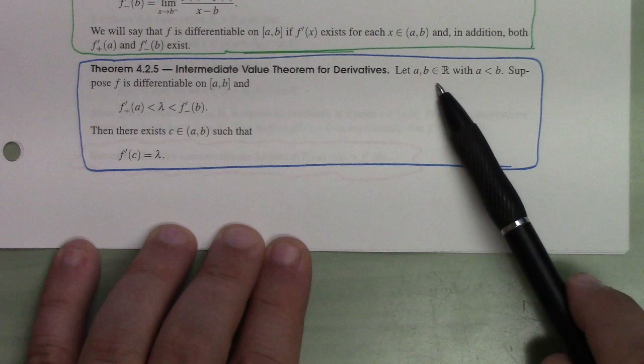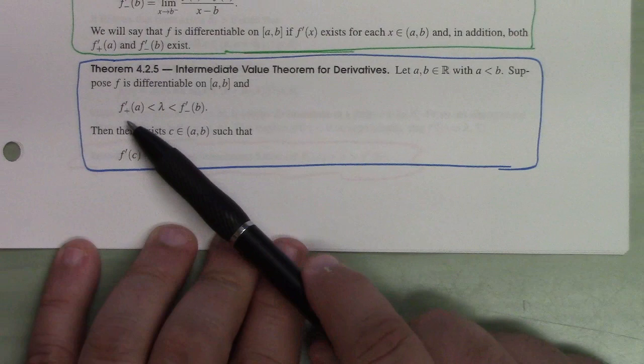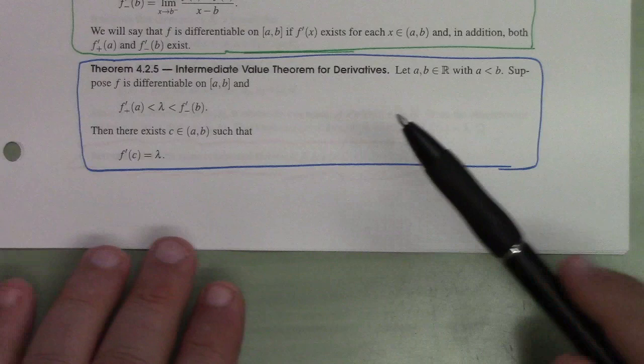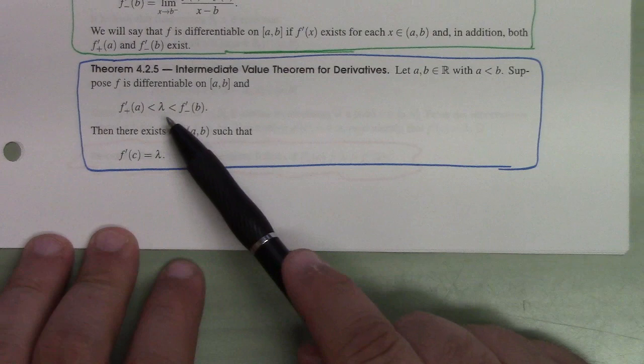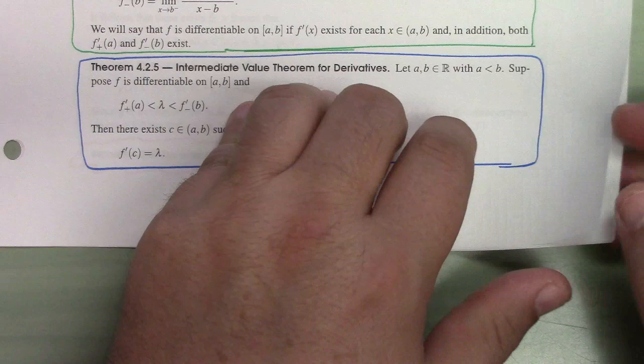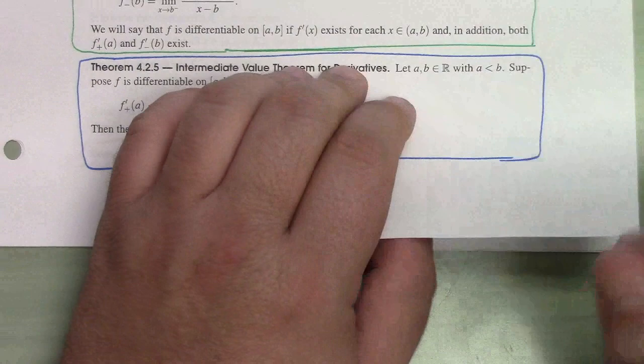Here's a neat theorem: if a < b, f is differentiable on the closed interval [a,b], and λ is a value between the right derivative at a and the left derivative at b — that is, f+′(a) < λ < f−′(b) — then there exists some c in the open interval (a,b) such that f'(c) = λ. The similar statement holds if the order of the left and right derivatives is switched.